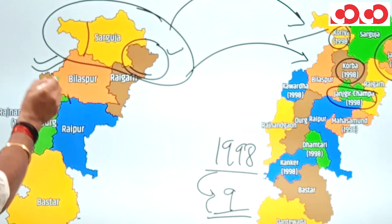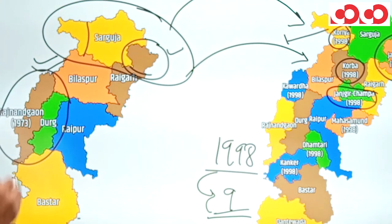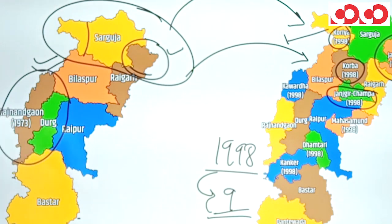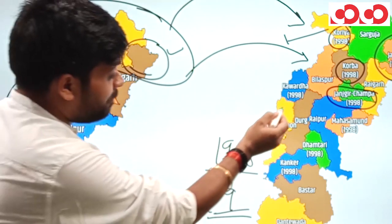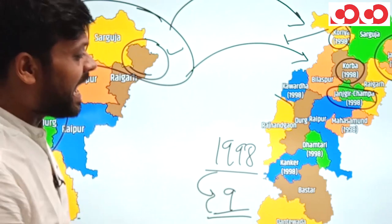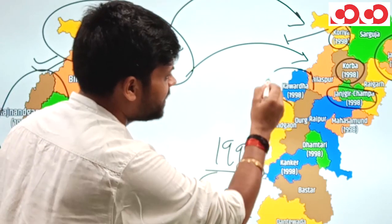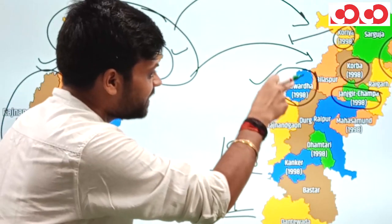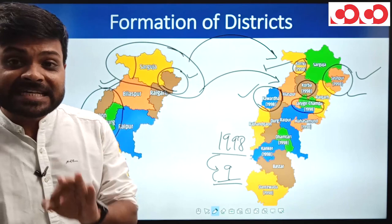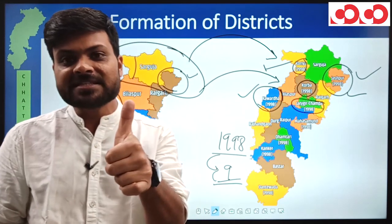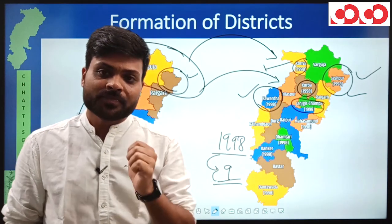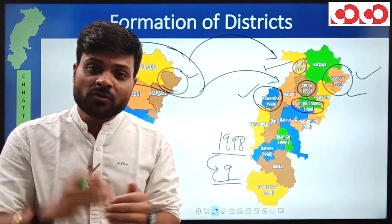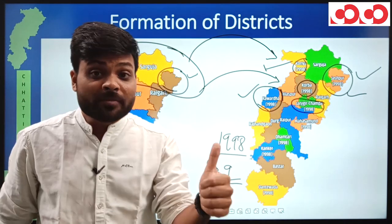In Durg division — referring to the 1973 map since Rajnandgaon was already formed — a part of Rajnandgaon district and some part of Bilaspur were taken to create a new district named Kawardha. So in 1998, one district was formed in Durg division: Kawardha. Summary so far: Surguja gave two — Jashpur and Korea; Bilaspur gave two — Korba and Janjgir-Champa; Durg gave one — Kawardha.